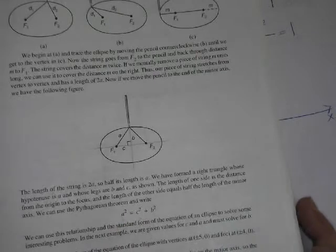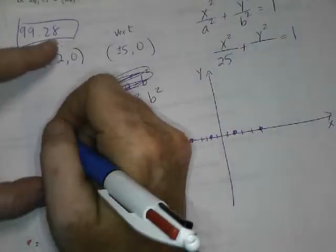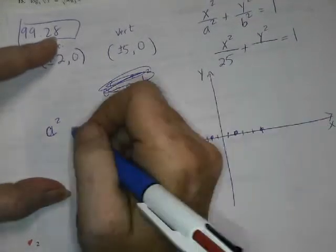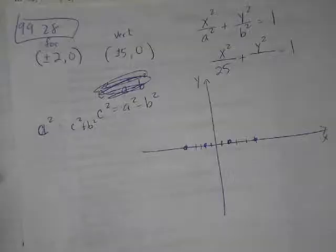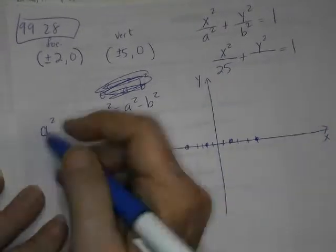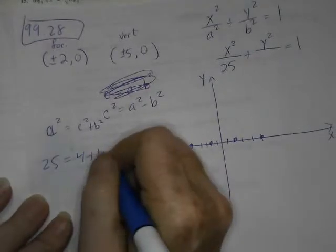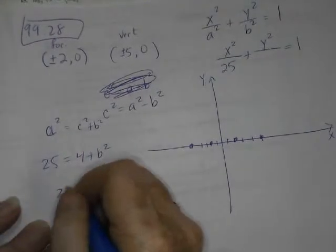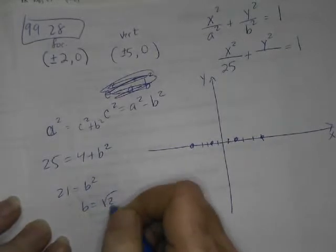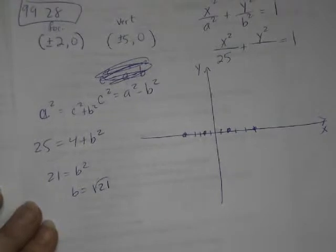Okay, we'll just do it that way. A squared, I'm going c squared plus b squared. So 25 equals 4 plus b squared. Square root of 21. Yeah, square root of 21. Let me make sure that's right before we keep going, because that seems suspicious. Yep, that's right.